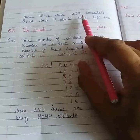So hence there are 277 complete rows and 14 seeds.